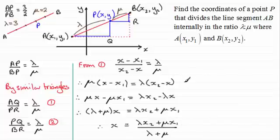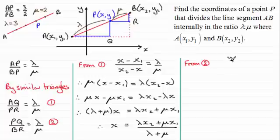So I now have the x coordinate for P, and I can do a similar thing to get the y coordinate for P, and I do that by using equation two. So from two, we see that this time we're comparing PQ to BR. So when we look at PQ, that distance there is y minus y₁, and that's divided by BR. And BR is going to be y₂ minus y, so you've got y₂ minus y, and that will equal lambda over mu.